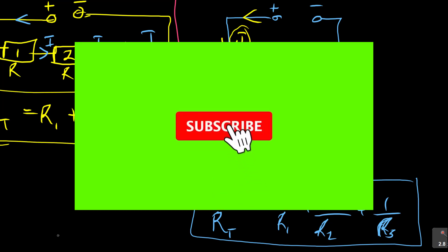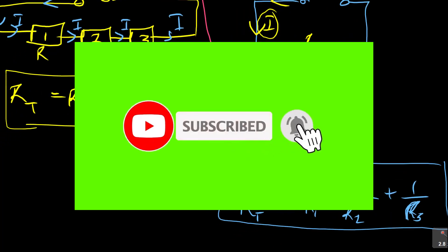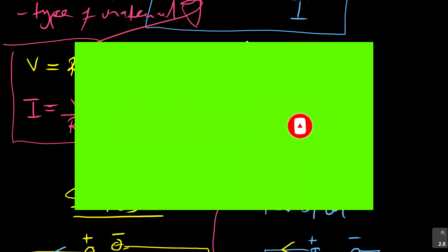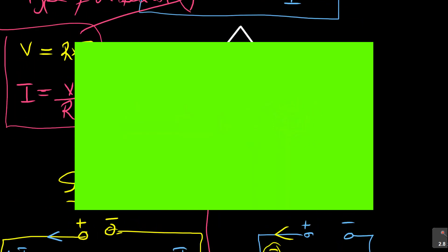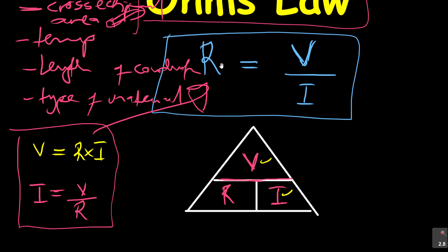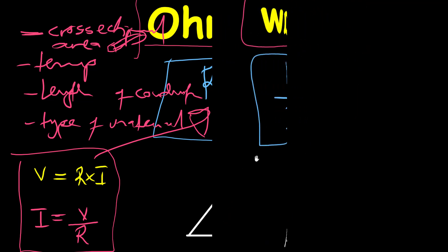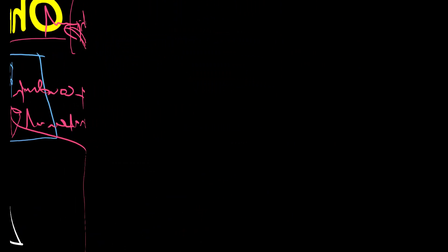So guys, that's what you need to know when dealing with Ohm's Law. Remember, resistance is voltage over current. You can use the triangle to find the voltage and the current. I encourage you to subscribe to the channel — you'll be notified every time there's a new video, and ensure the notification bell is turned on. We've come to the end of our lesson.